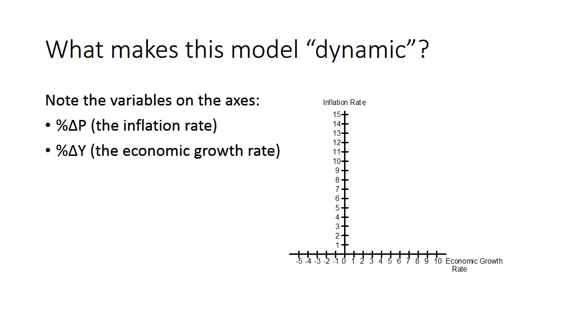Most textbooks use a different version of the Aggregate Demand Aggregate Supply Model. They put the price level on the vertical axis and real GDP on the horizontal axis. This version of the model puts the rate of change of the price level on the vertical axis and the rate of change of real GDP on the horizontal axis.